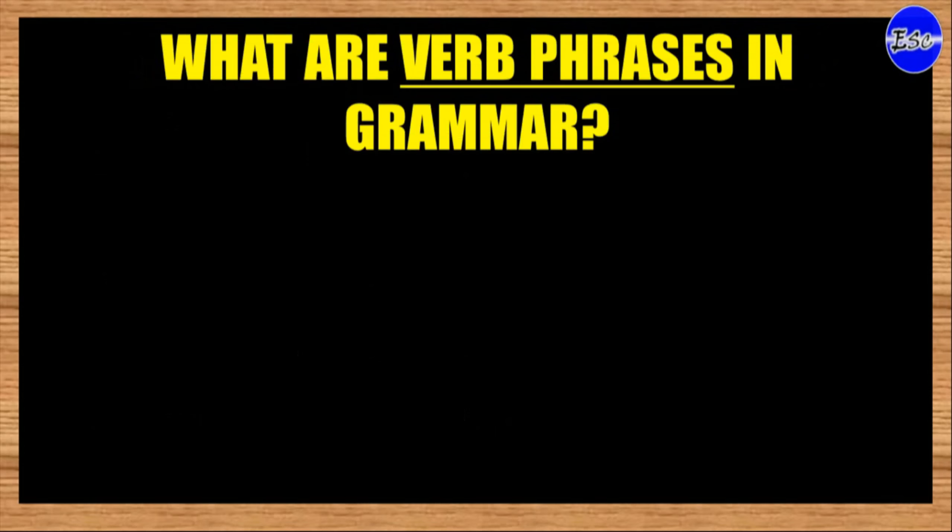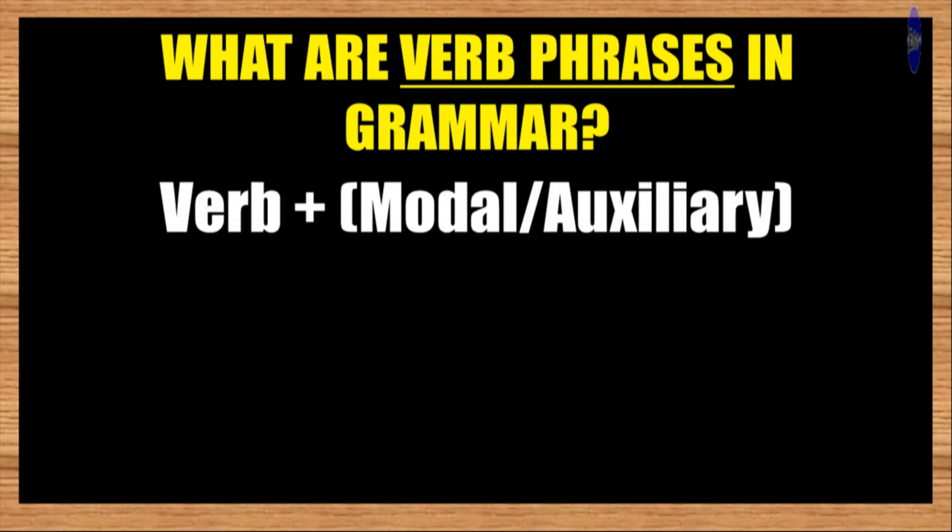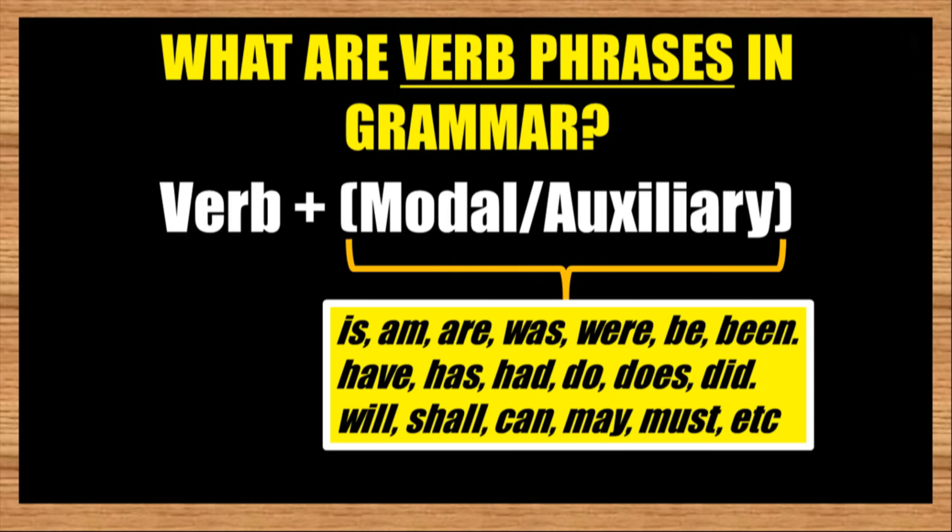What are Verb Phrases in Grammar? A Verb Phrase is a group of words including the main verb and any other modal or auxiliary verbs that act as a sentence's verb. Modal and auxiliary verbs are such as Is, Am, Are, Was, Were, Be, Been, Have, Has, Had, Do, Does, Did, Will, Shall, Can, May, Must, and etc. In Verb Phrases, the main verb holds information about the event or activity that is being referred to and the auxiliary verbs add meaning by relating to the time or aspect of the phrase.